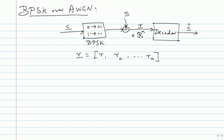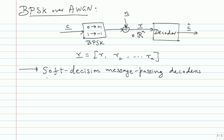The likelihood ratio was very useful — we could write the overall expression in terms of the likelihood ratio and had some simplifying formulas. The message passing decoders will try to approximately compute that probability. The theme behind soft decision message passing decoders is: they are approximations of bitwise MAP decoders.